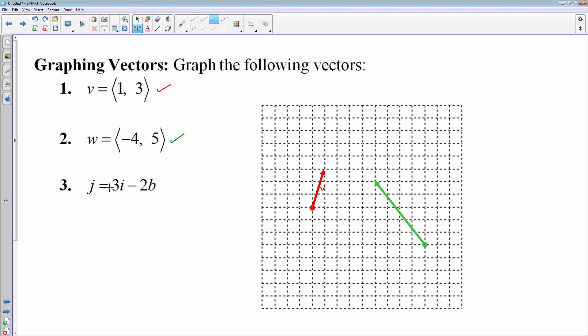So that would be my vector w. It's done in green. And then finally j is 3i minus 2b. That should be j, not 2b. I need to fix that. That should be 3i minus 2j.